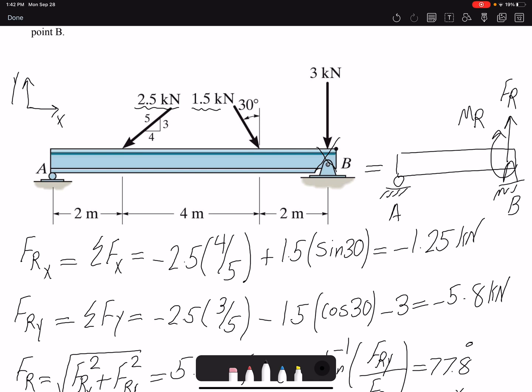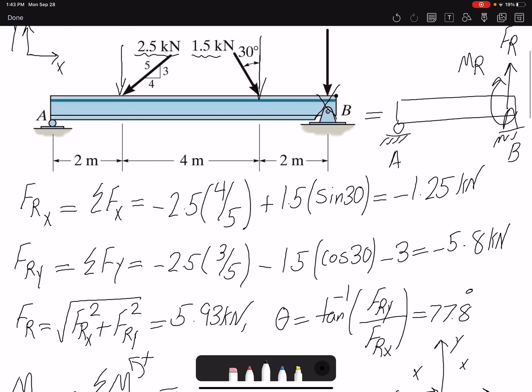Our 1.5 kilonewton, the y component is going to create a moment, not the x component. The x component will go through point B. Same thing for 2.5 kilonewton. Only the y component is going to create a moment. And at point B, both these forces are going to create a counterclockwise moment. Which means positive for us. So we have 2 positive moments acting on our B.